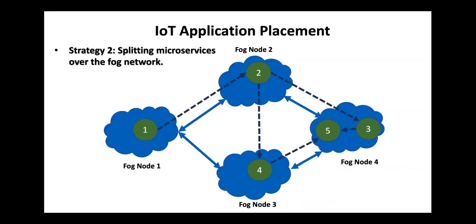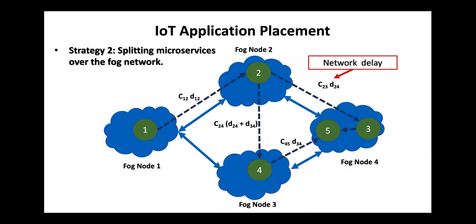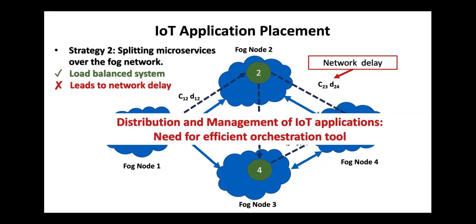The second strategy is to split the microservices over the network. This leads to data exchange between the microservices over the network, which contributes to network delay. This strategy results in a load-balanced system, but at the same time increases the network delay. We want low energy consumption at fog nodes and low network delay of the application, so these dual objectives present a trade-off. Thus, the distribution and management of IoT applications requires an efficient orchestration tool.